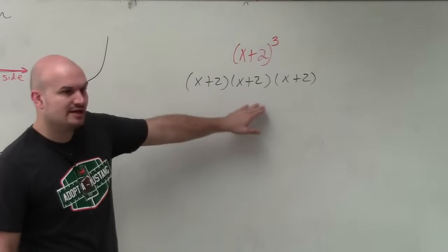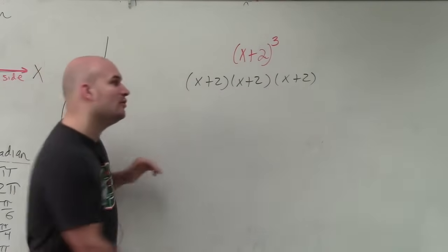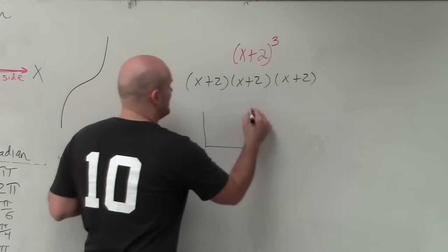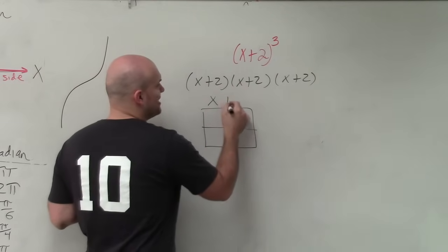So anyways guys, just like as I mentioned, just multiply a binomial times a binomial. Now you could use FOIL. However, I would recommend that if you're having trouble, use the box method.